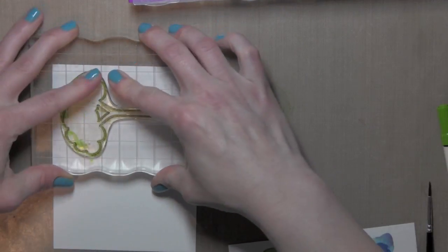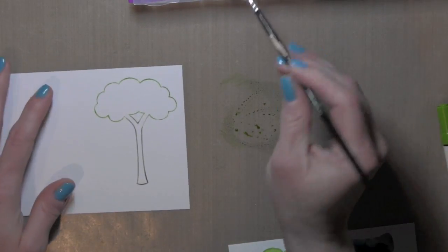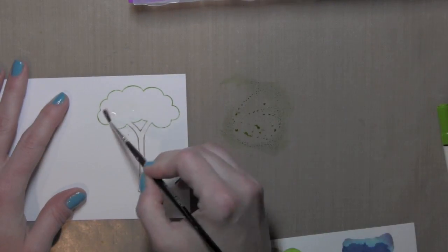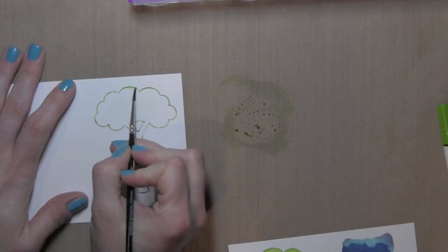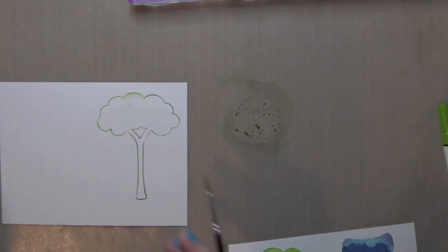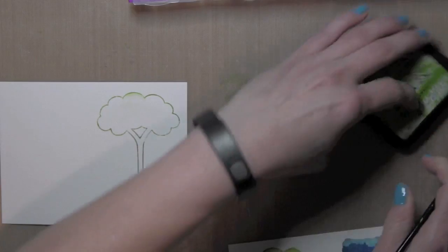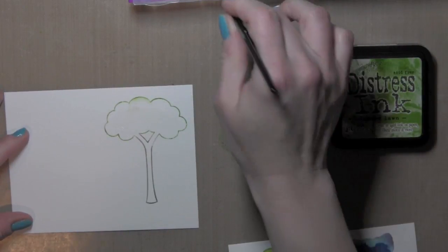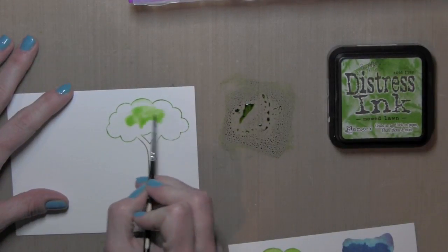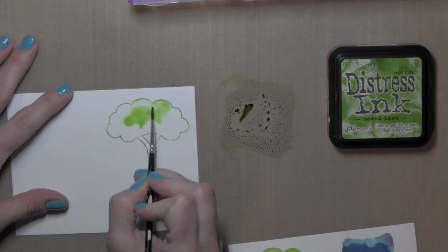For my card today, I wanted to stamp my images so that they didn't have that black outline. Instead, I wanted them to look more like a solid image, but I wanted them to be a water colored type look without an outline, either an embossed outline or a black outline.